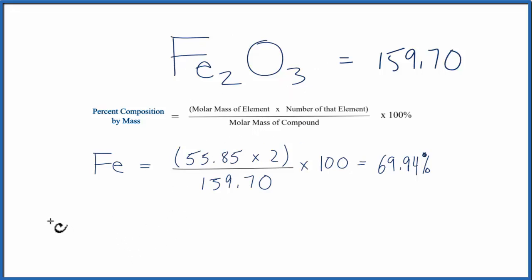We take our oxygen, and that equals the molar mass of oxygen, which is 16.00 grams per mole. We have three of them. We're going to divide that by the molar mass of the entire compound, multiply it by 100, and when we do that,